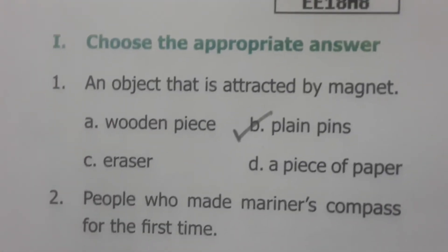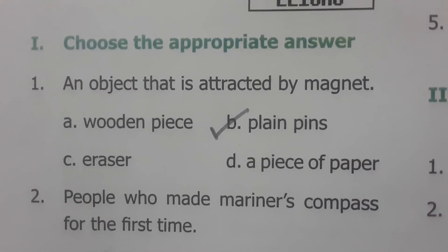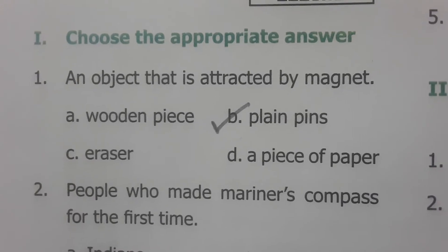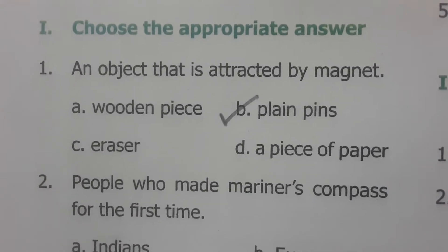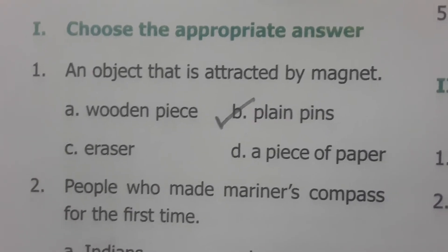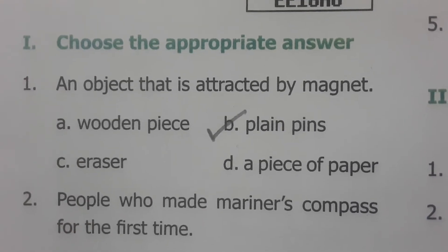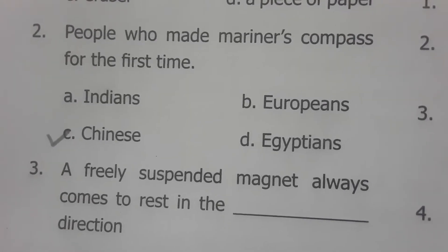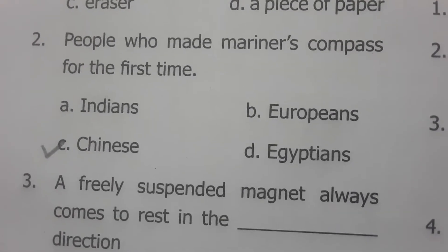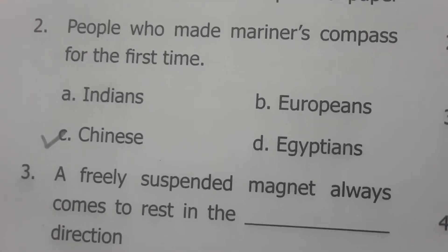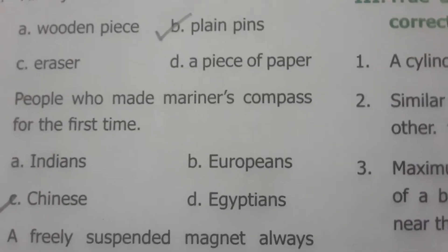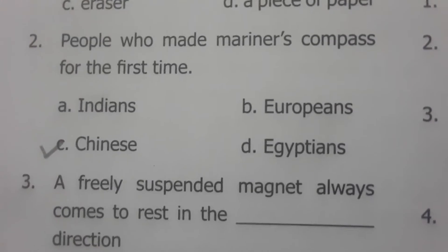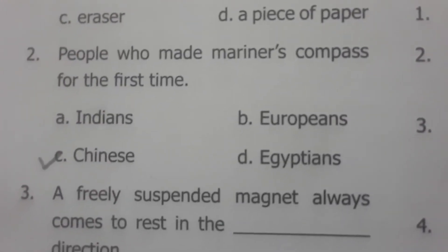In the book back evaluations, choose the appropriate answer: an object attracted by a magnet is plain pins, because a piece of paper, wooden piece, and eraser made of rubber are all non-magnetic materials. Only plain pins are attracted by the magnet. Who made the mariner's compass for the first time? The Chinese made the mariner's compass using lodestones to detect directions while traveling over the sea.